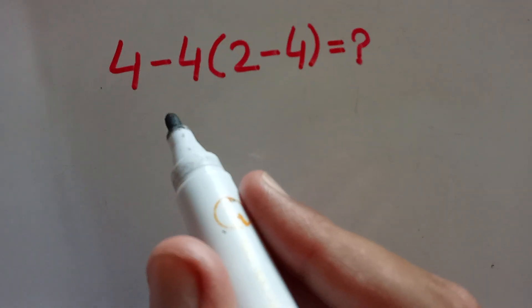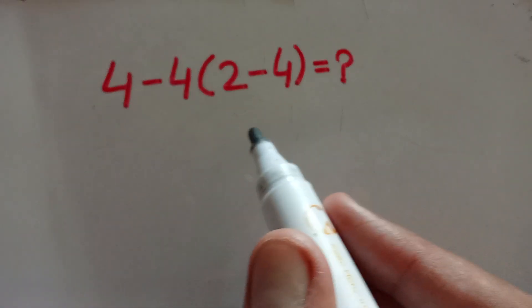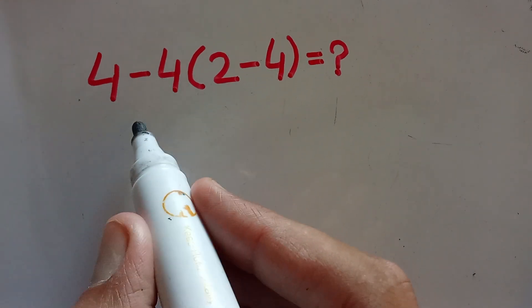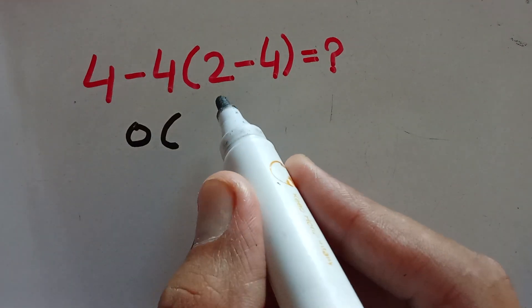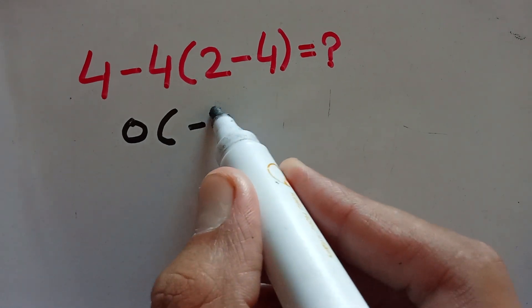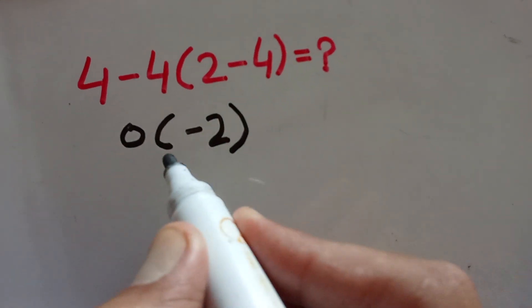If you have not subscribed to my channel, please subscribe for more interesting videos. So, 4 minus 4 equals 0, into 2 minus 4 which equals minus 2. So 0 times minus 2 equals 0. But this answer is wrong.